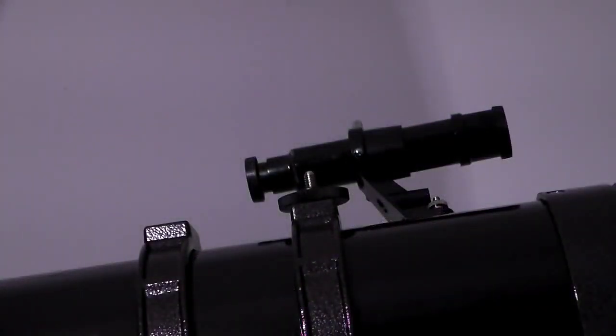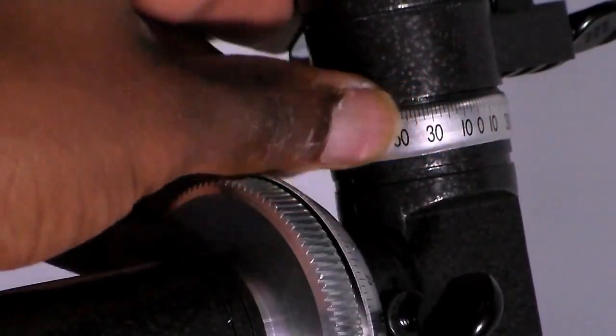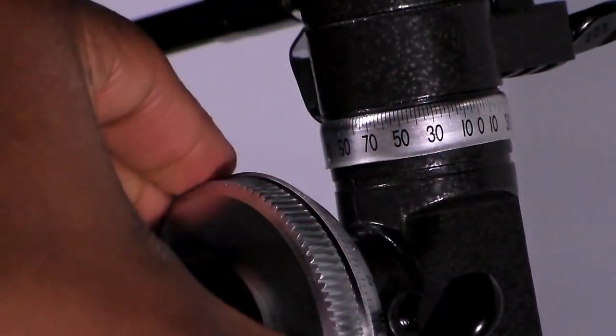The finder scope is used to locate a distant object, but with lower resolution than the main telescope. Without moving the main telescope, turn the adjustment thumbscrews around the finder scope bracket until the crosshairs of the finder scope are centered on the object chosen with the main telescope.